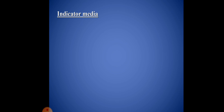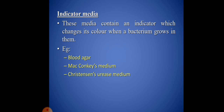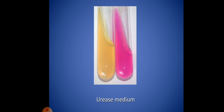The next one is indicator medium. This media contains an indicator which changes its color when a bacterium grows in it. Examples: blood agar, MacConkey agar, and Christensen's urea medium.